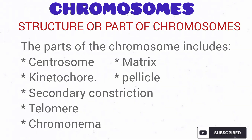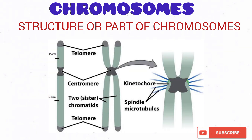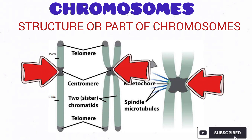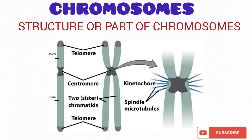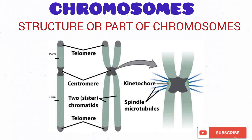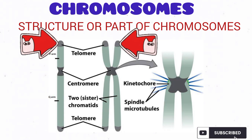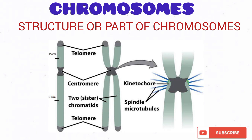Let's talk about the structure of the chromosome. The parts of the chromosome include the centromere, the kinetochore, secondary constriction, telomere, chromomere, matrix, and pellicle. Take a look at this diagram. The centromere is the structure holding the two sister chromatids together. The centromere provides a space for the attachment of the kinetochore. The kinetochore is the structure connecting the spindle fiber to the centromere. Now take a look at the end of this chromosome — you can see the telomere. There are repetitive DNA sequences found at the end of the chromosome and they actually protect the chromosome from degradation.